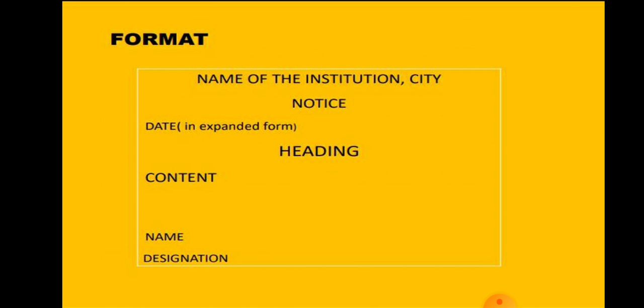This is the format of notice writing. First, write the name of the issuing agency along with the place, followed by the word 'NOTICE', then the date, then the heading. The name of the institution, the word 'NOTICE', and the heading are written in the middle of the box. The date is always placed at the left-hand side corner in expanded form. After the heading comes the body of the notice, followed by the name and designation of the authorized person. After completing the notice, draw the box.